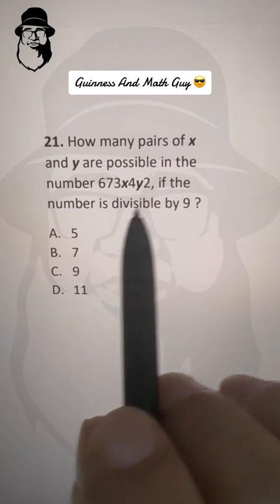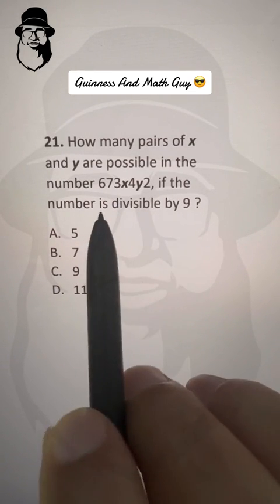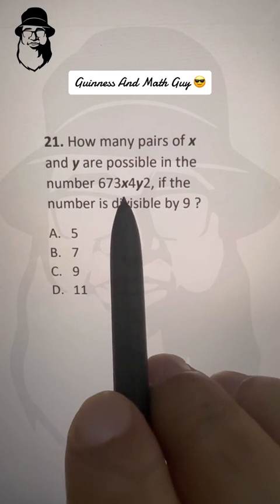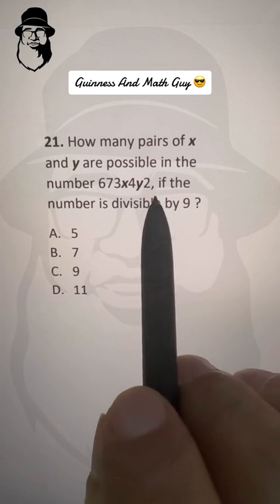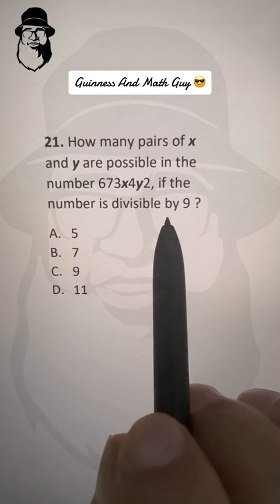How many pairs of X and Y are possible in the number 6, 7, 3, X, 4, Y, 2 if the number is divisible by 9?